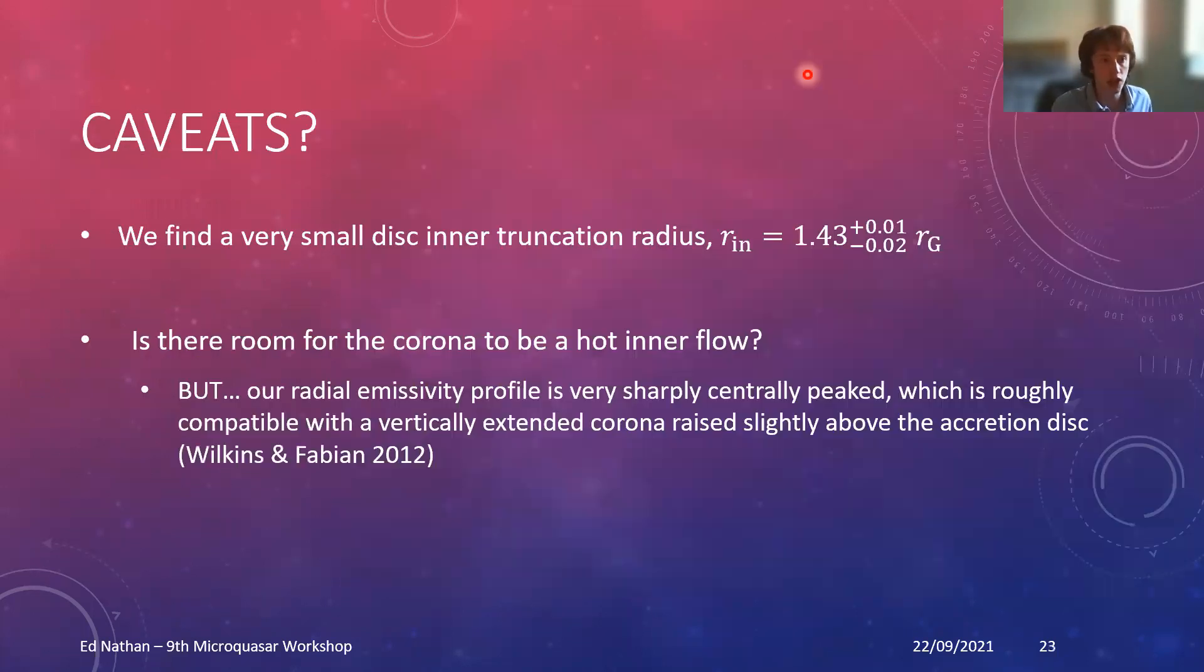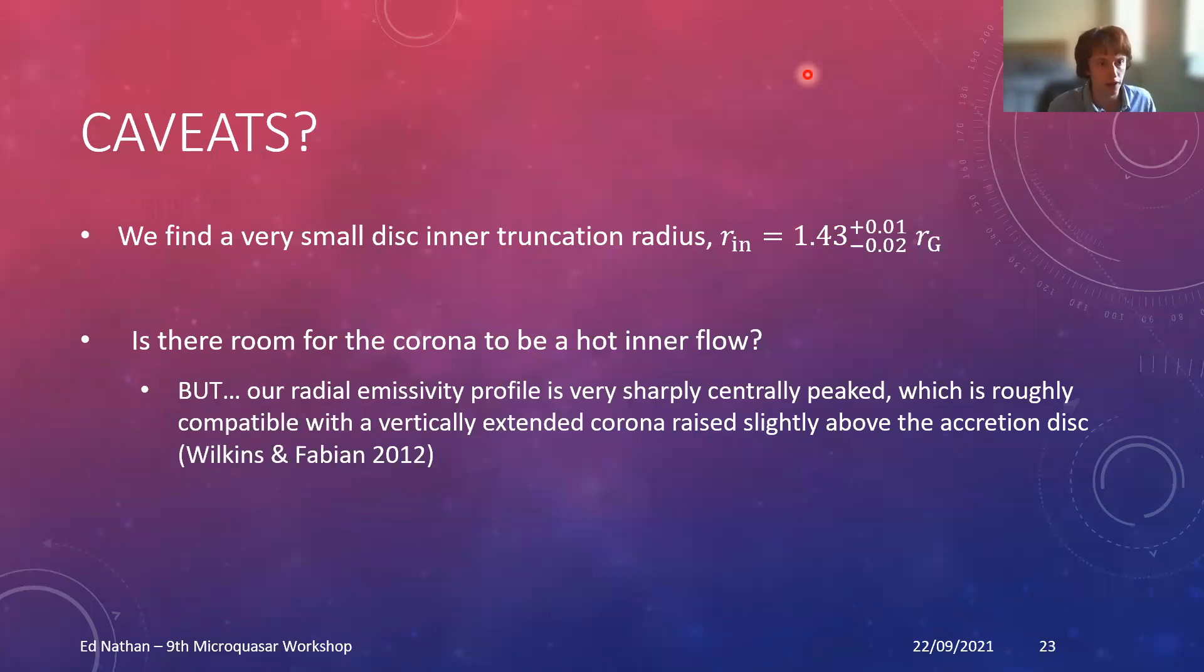Just to finish off in what I believe is my final minute or so, we find a small inner truncation radius. If you compare that to an ISCO, even for a maximally spinning black hole, that is very small. Is there room for there to be a corona within the truncation radius for this hot inner flow model? Potentially not. But one thing we do find is our radial emissivity profile is very sharply centrally peaked.